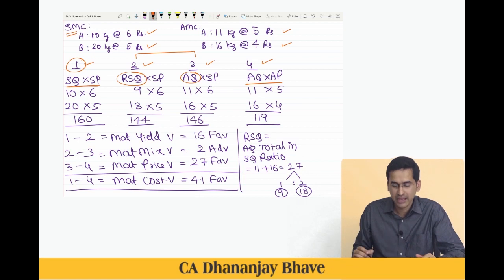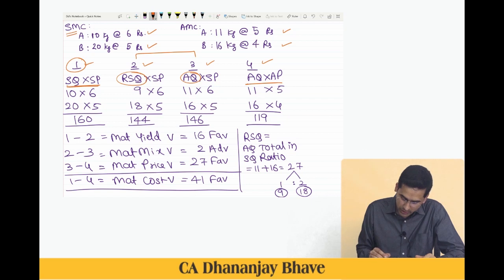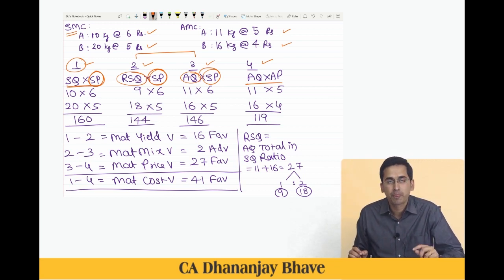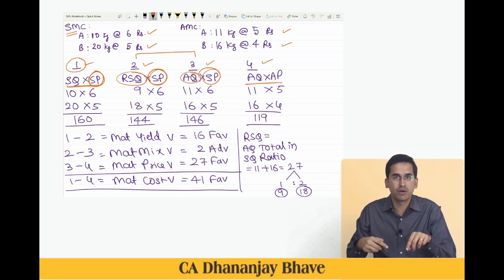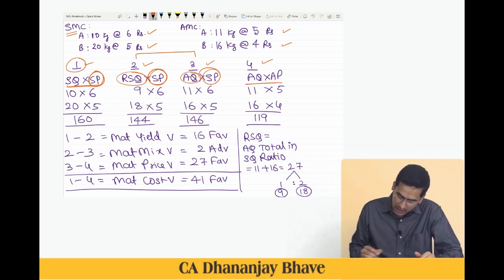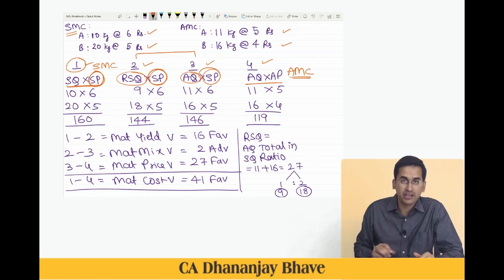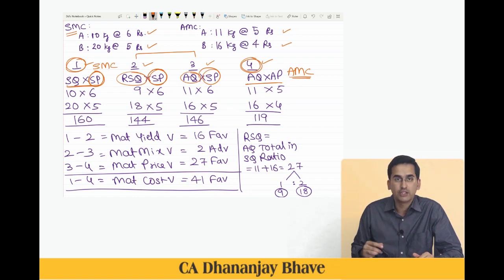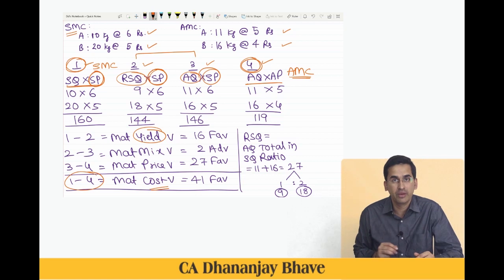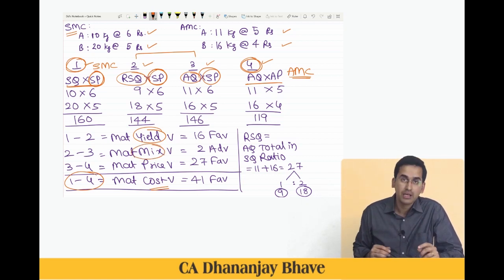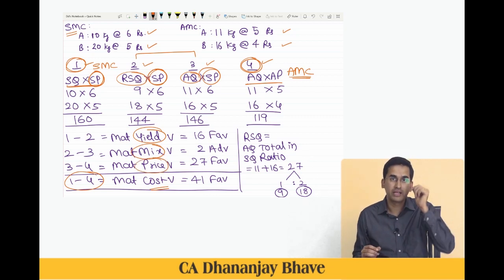The four-column table has: Column 1 = SQ × SP; Column 2 = RSQ × SP; Column 3 = AQ × SP; Column 4 = AQ × AP. Columns 1, 2, and 3 all use standard price, so differences among them capture quantity-related variances. Column 1 minus Column 2 gives yield variance; Column 2 minus Column 3 gives mix variance; Column 3 minus Column 4 gives price variance. Column 1 minus Column 4 gives the total material cost variance.